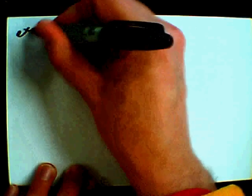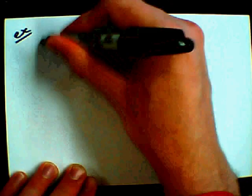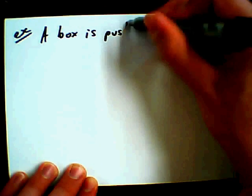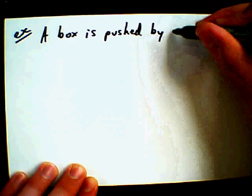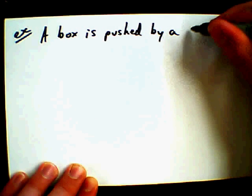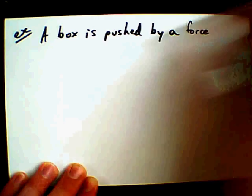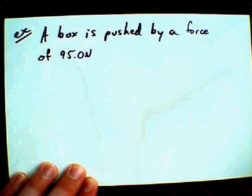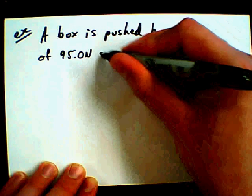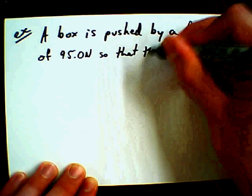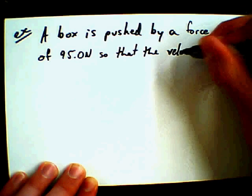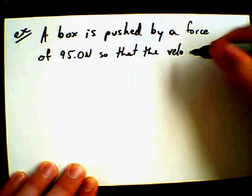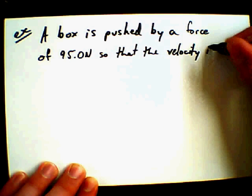I'll do an example where we push a box. We're going to push with a constant force of 95 newtons so that the velocity of the box, with friction and all that sort of stuff working together, is a constant velocity. So the velocity is constant.